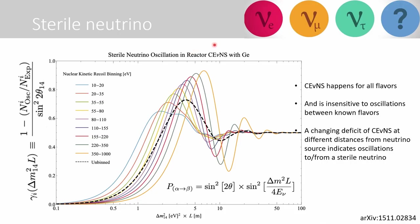Another interesting fact is that CEvNS happens for all neutrino flavors, which is why it is insensitive to oscillations between known flavors. A charge deficit of CEvNS at different distances from a neutrino source indicates the oscillation of known flavors to or from a sterile neutrino.